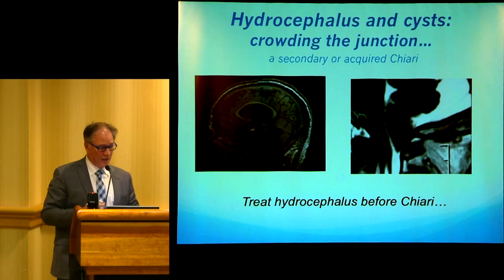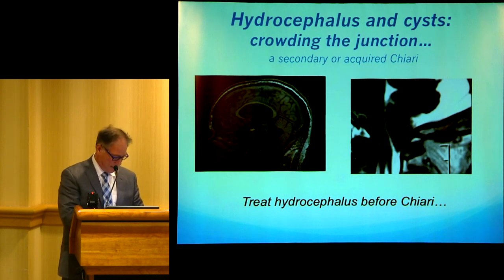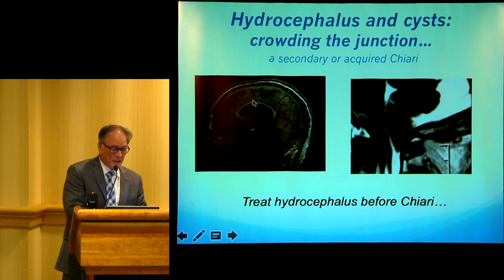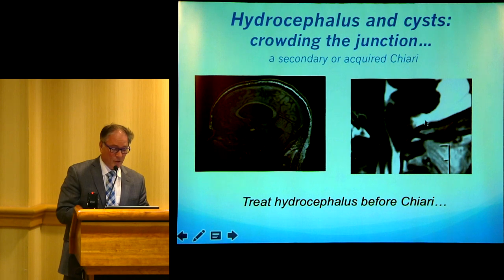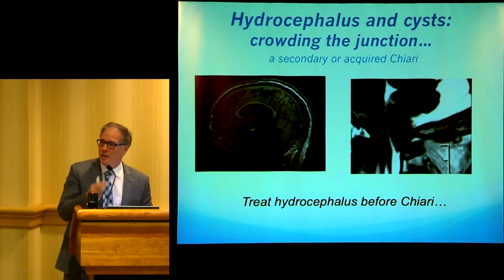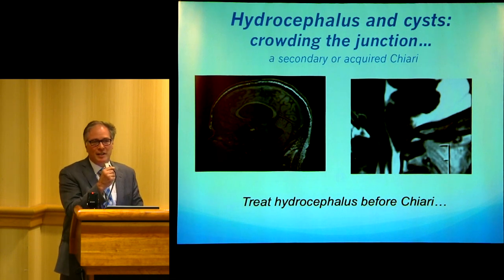Here are some examples. On the left you see an obstructive hydrocephalus where the obstruction is at the bottom of the fourth ventricle. There's a Chiari malformation, but it's due in large part to pressure from the lateral ventricles, the third ventricle, and a very much enlarged fourth ventricle. On the other side, there's a Chiari malformation past C1 with crowding and even a syrinx in the spinal cord, plus cysts that form as part of the crowding. The general feeling in most of these situations is to treat the hydrocephalus first. If you don't, you'll likely have continued downward pressure and won't have a successful treatment — you might even make things worse.